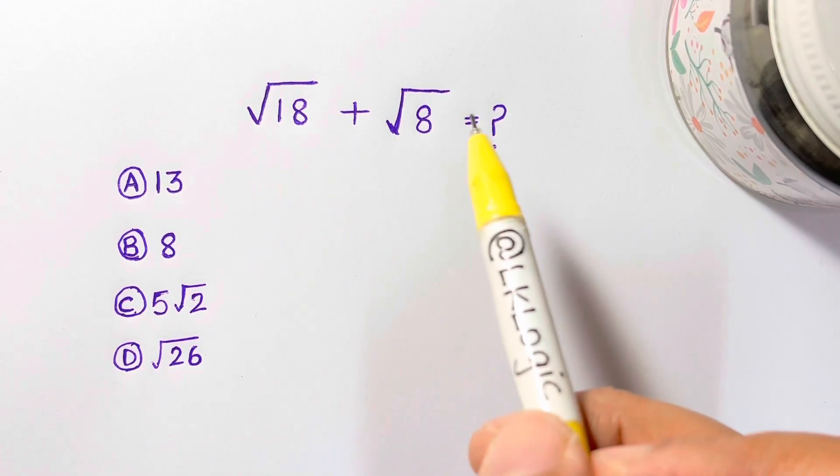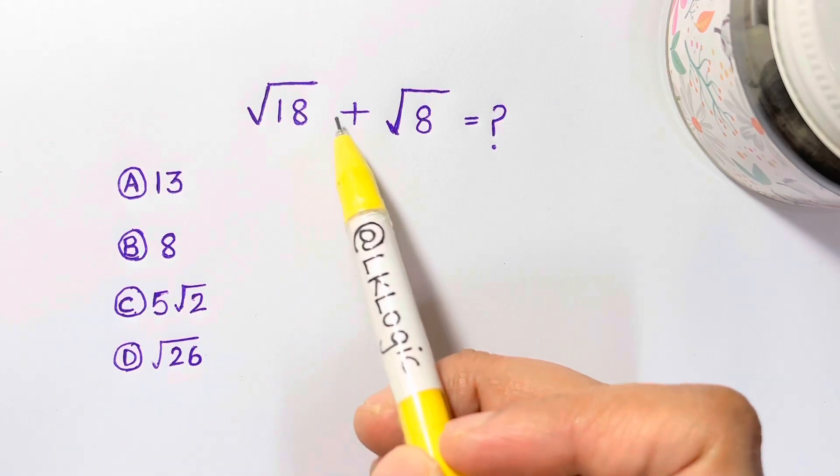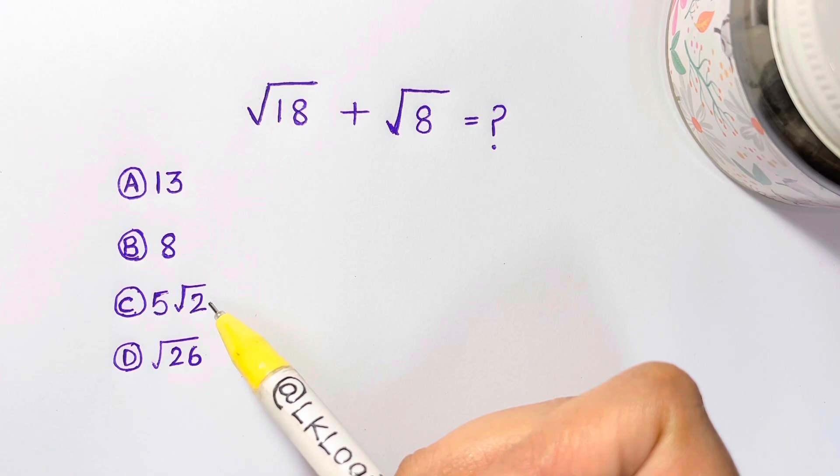Hi guys, have another radical problem for you all. A very nice one which is square root of 18 plus square root of 8 equals what? Is it 13 or 8 or 5 square root 2 or square root of 26?